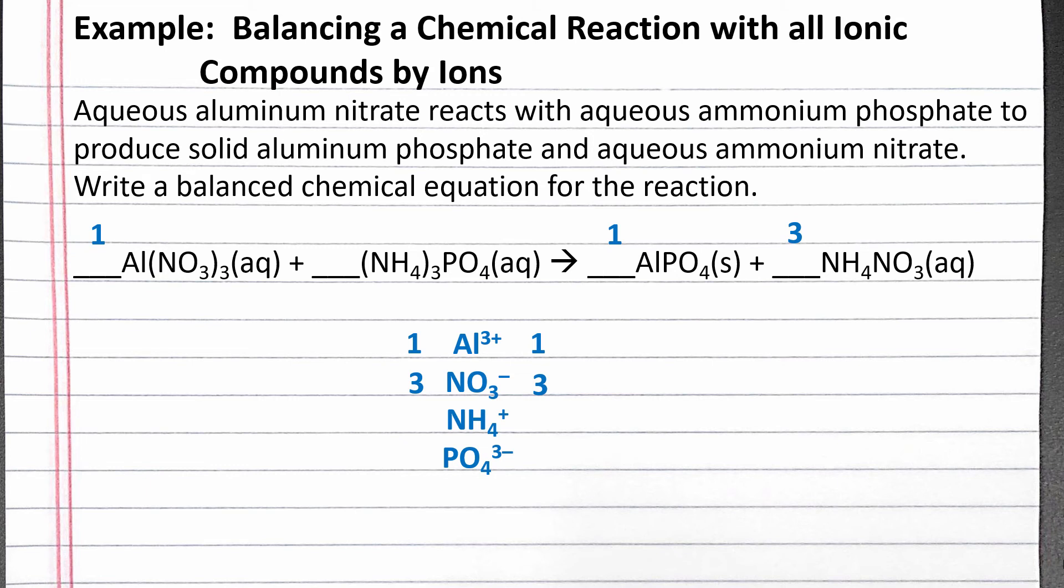And now we have three ammonium on the right. To get three ammonium on the left, we add a one coefficient in front of ammonium phosphate.